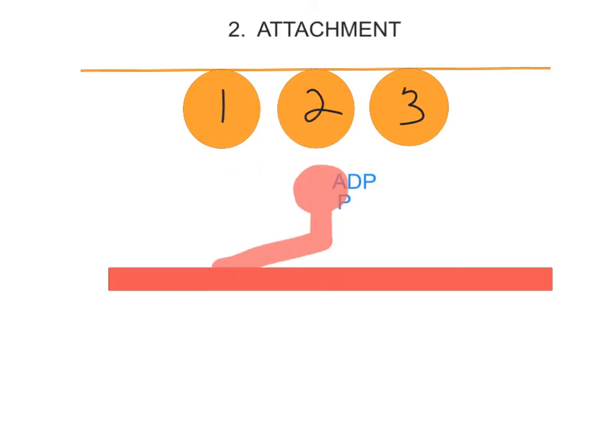In the next stage, the phosphate group is released. This again causes a conformational change in the myosin head, and now what happens is that the myosin head becomes attached to the actin binding site. I was just listening to this and just realized I made a mistake. It's not called the actin binding site, it's called the myosin binding site on the actin molecule.